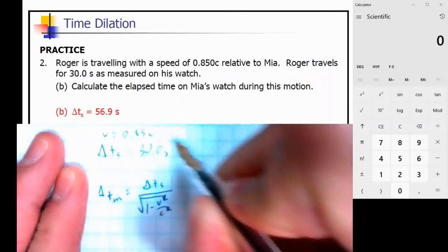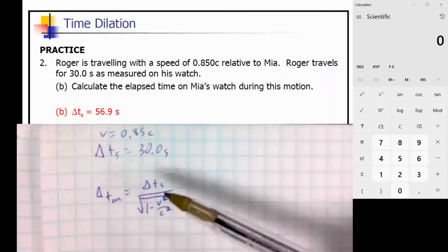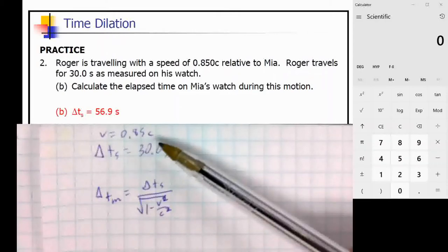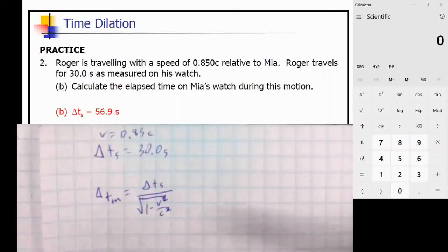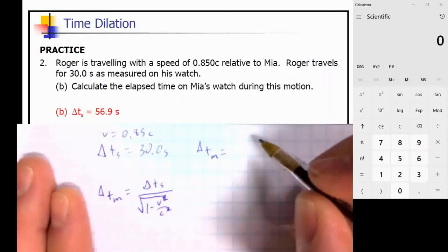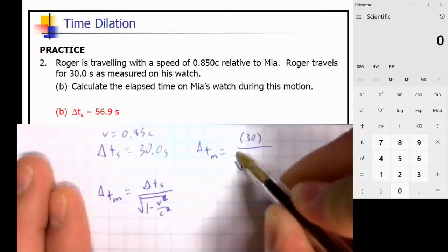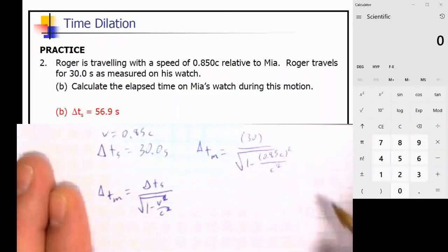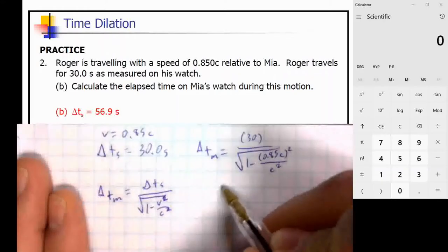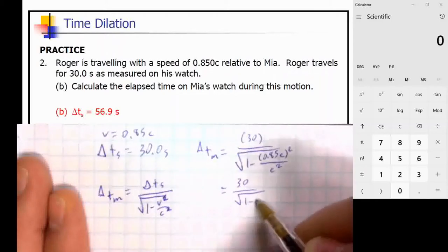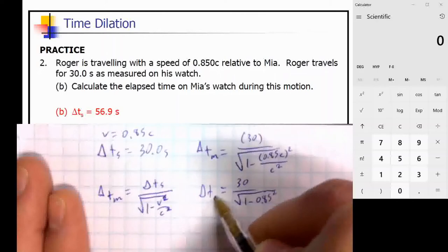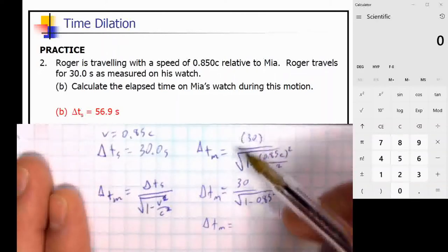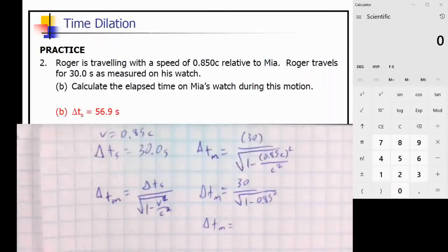V equals 0.85c. When using this equation, we substitute 0.85c and the c² terms cancel out. So ΔTm equals 30 over the square root of 1 minus 0.85². That gives us 30 divided by the square root of 1 minus 0.85², which works out to 56.9 seconds. That's the relativistic time for this question.